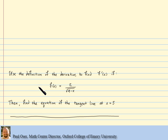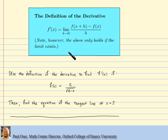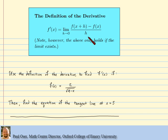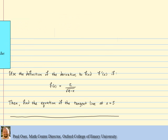With regard to the first task, using the definition of the derivative, let's remind ourselves what that definition is. The derivative is defined to be a limit as h goes to zero of f of x plus h minus f of x, all of that over h, provided of course this limit exists. So that's a starting place for us.